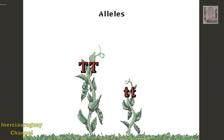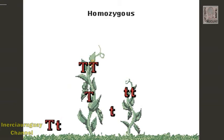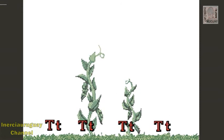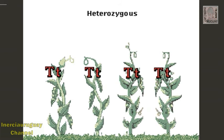In purebred plants, both alleles carry the same information and are said to be homozygous. When the purebred plants are crossed, their offspring each receive one allele for tall and one for short. These plants are called heterozygous.